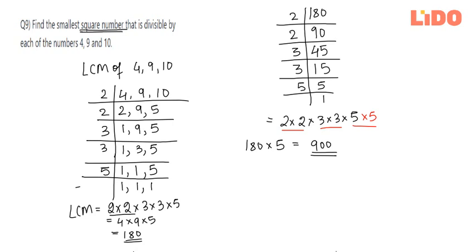Please pay attention to the word square that's mentioned here. If you miss out this particular word, then you might even stop at the answer saying that 180 is divisible by 4, 9 and 10. But the catch here, it mentions that it needs the smallest square number.